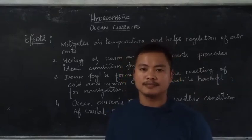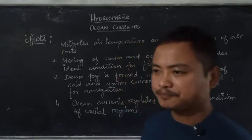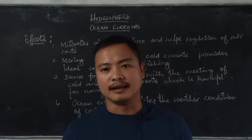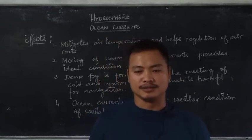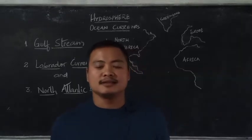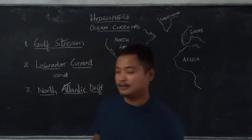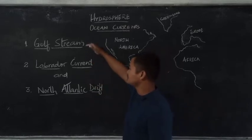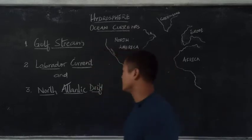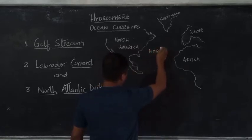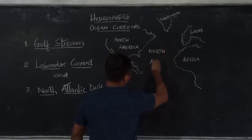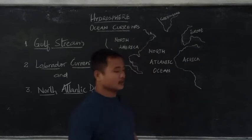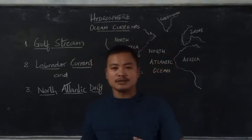As per the syllabus, the ocean currents we will discuss are: Gulf Stream, North Atlantic Drift, Labrador Current, Kuroshio, and Oyashio. We will first discuss the three ocean currents of the North Atlantic waters — that is, Gulf Stream, Labrador Current, and North Atlantic Drift. All three of these currents are ocean currents of the North Atlantic Ocean.